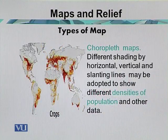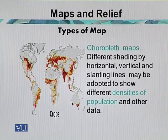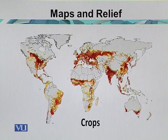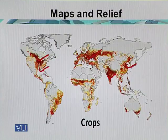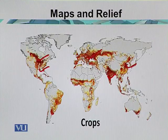The next category is the choropleth map. Different shades using horizontal, vertical, and slanting lines may be adopted to show different densities of population and other data. For example, a choropleth map can show the major crops of the world — most belonging to South Asian countries, East Asian countries, the European lowlands, and the northern and central parts of the USA. Different colors represent different types of crops.